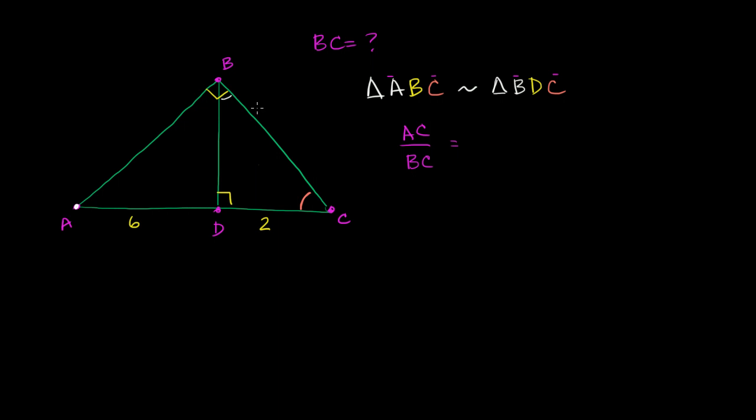And so this is interesting because we're already involving BC. And so what is going to correspond to—and then if we look at BC on the larger triangle, BC is going to correspond to what on the smaller triangle? It's going to correspond to DC. And it's good because we know what AC is and we know what DC is, and so we can solve for BC.